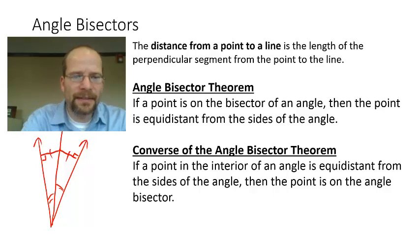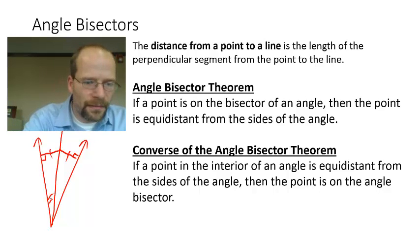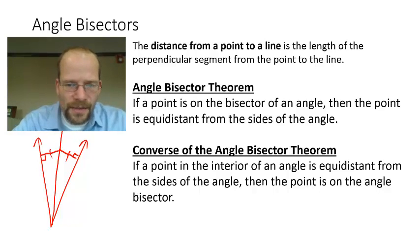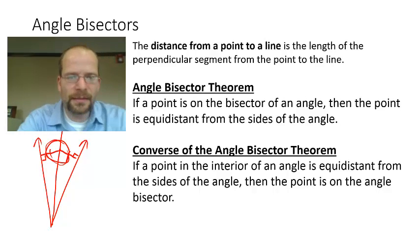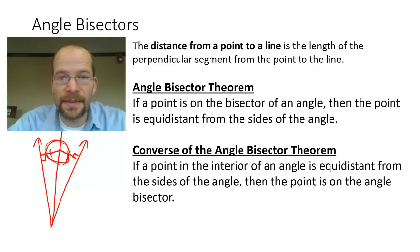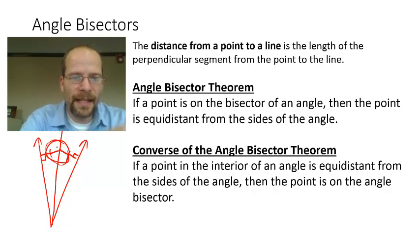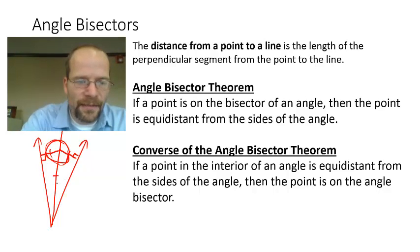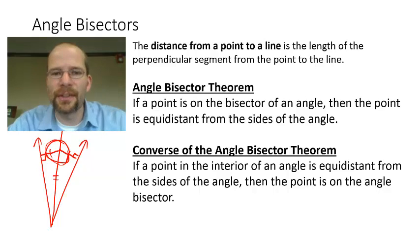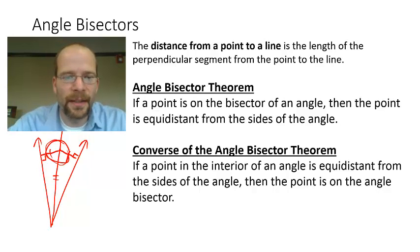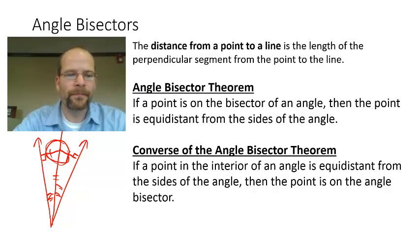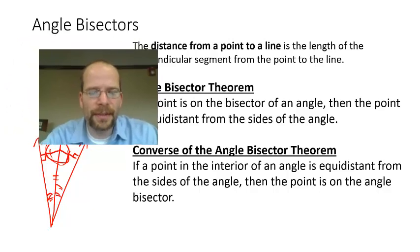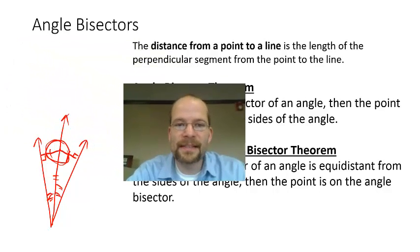Here's a quick proof of the converse of the angle bisector theorem. If we know that we have a pair of sides — which are actually legs — we're dealing with right triangles here. We have two sides that are congruent, we have two right triangles, and we also have this hypotenuse that's congruent. By the hypotenuse-leg theorem, the triangles must be congruent. And if the triangles are congruent, then by CPCTC these angles must be congruent, and therefore that is the angle bisector.